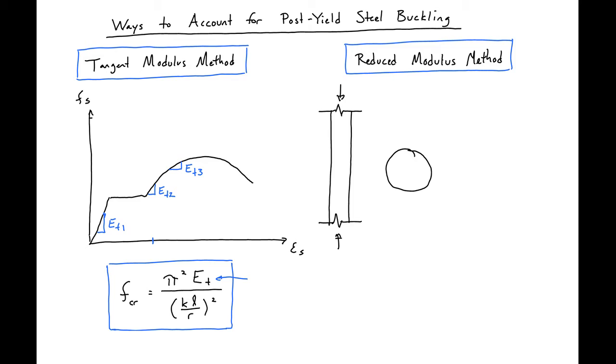One of the disadvantages to the tangent modulus method is it treats the entire steel bar as having the same stress and same strain on it. When in actuality that won't really be the case. So what we'll see is that our tangent modulus method is excessively conservative.